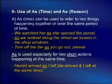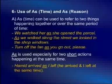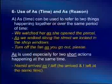You can use 'as' to show time and 'as' to show reason. When talking about 'as' referring to time, it can refer to two things. It can be used to refer to two things happening together or over the same period of time. Example: we watched her as she opened the parcel.